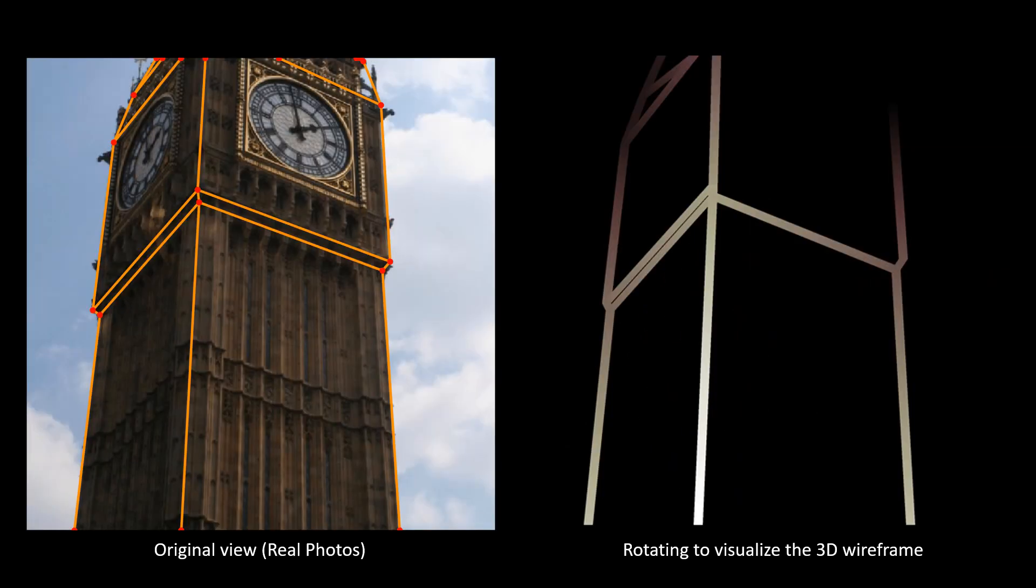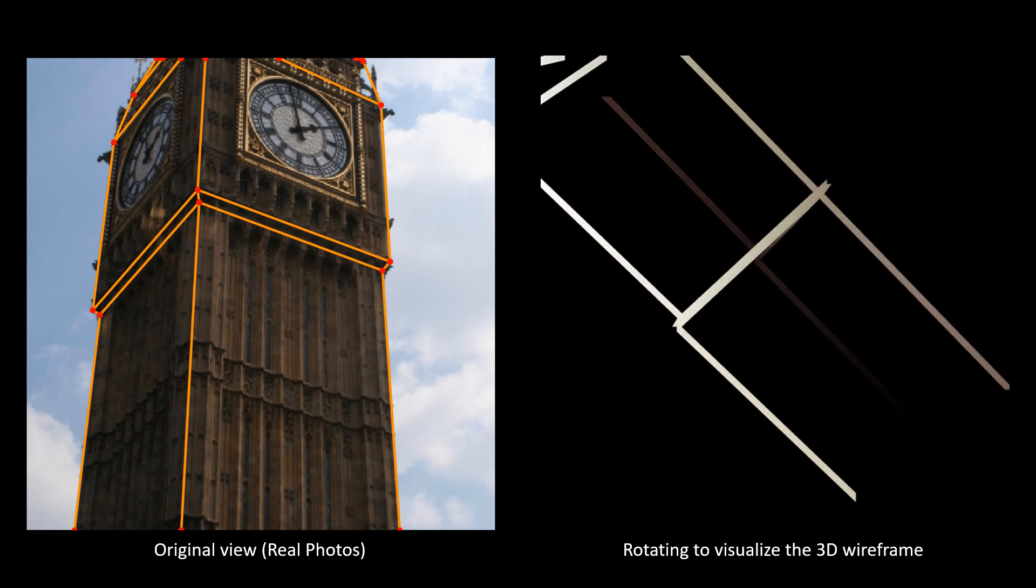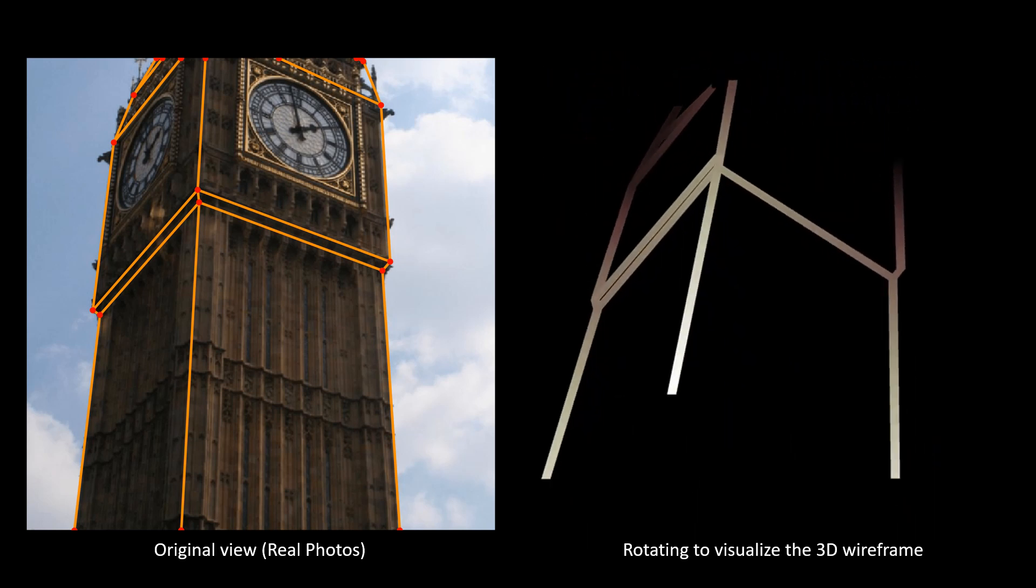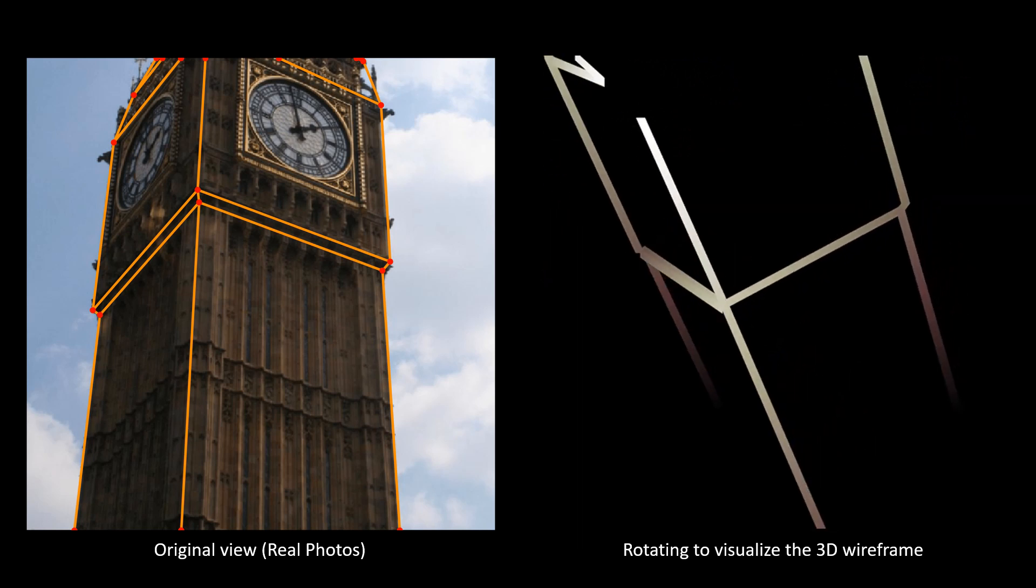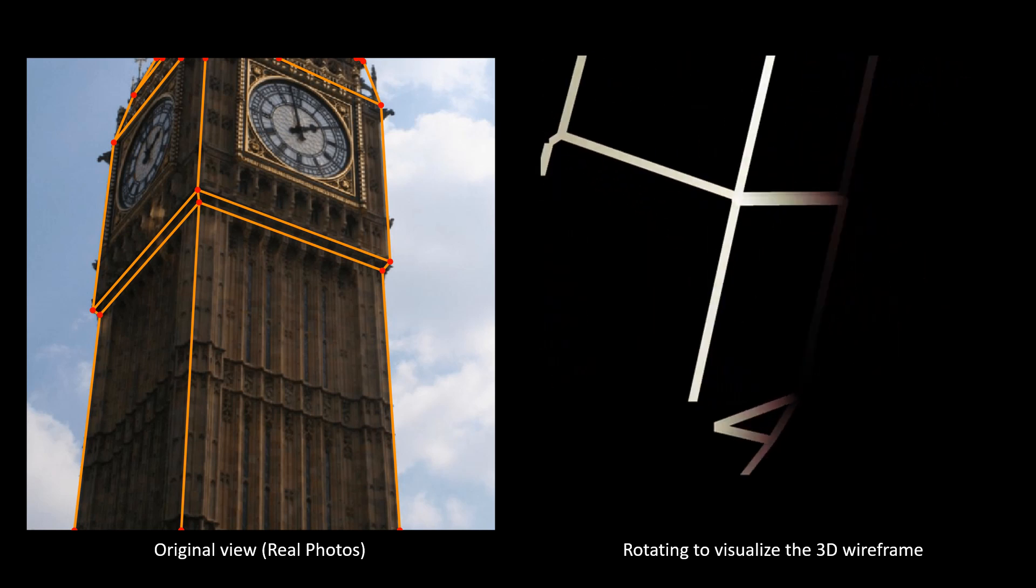This video clip shows how our algorithm works on a real-world scene. The left figure shows a human labeled 2D wireframe overlaid on a photo of the Big Ben clock. The right video visualizes our reconstructed result from a flying camera.